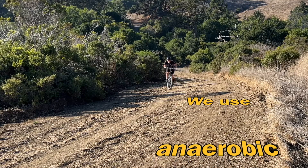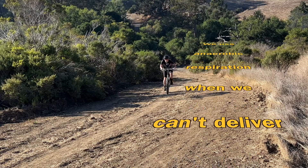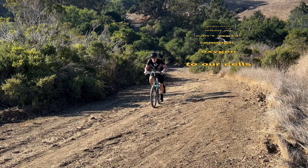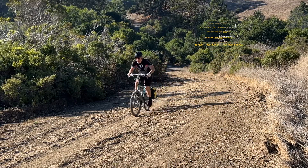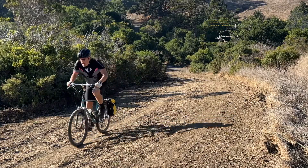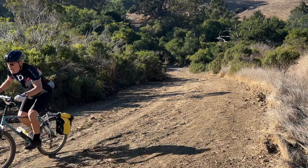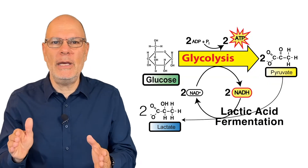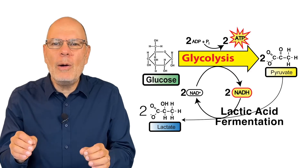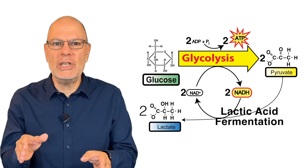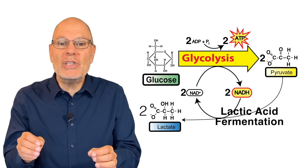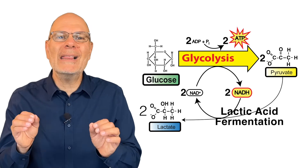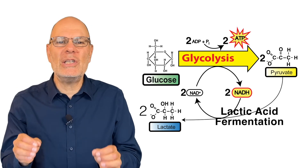That's what I'm doing as I bike up this hill. Even with my heart rate and breathing rate at their maximum, I can't deliver enough oxygen to the muscles of my legs to do this aerobically. But I can still make it up the hill through anaerobic respiration. My muscle cells are carrying out glycolysis, followed by lactic acid fermentation.